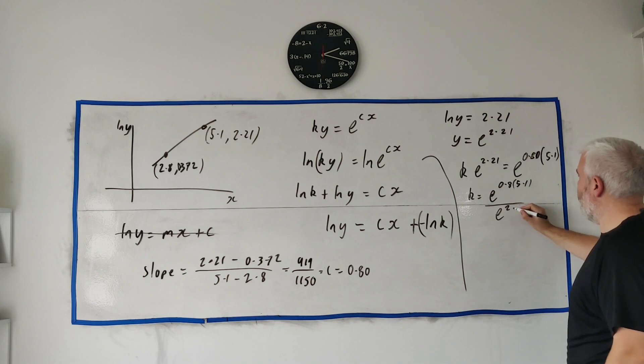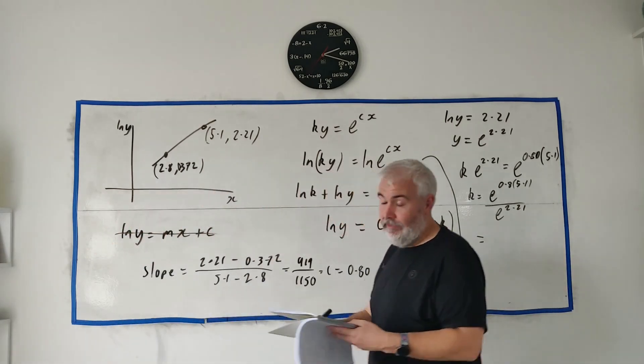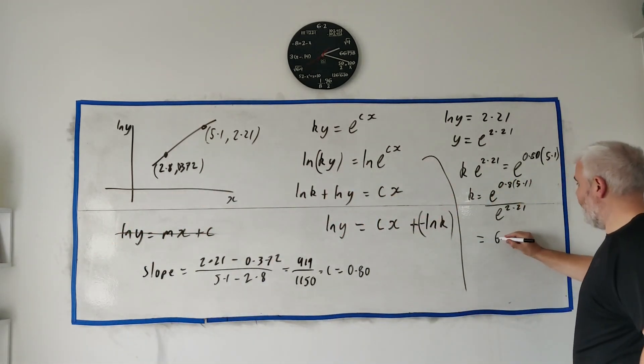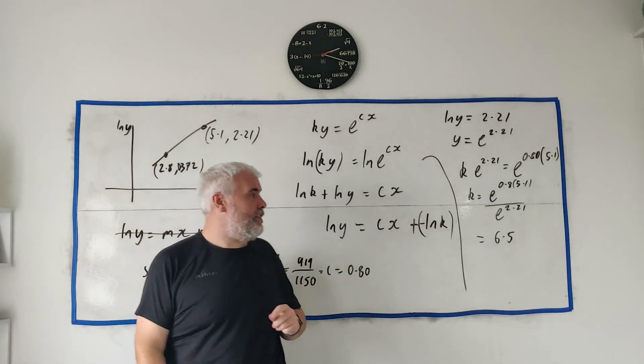Put all that into a calculator, let me just check my own notes, and to two significant figures we get 6.5. Yeah, two significant figures, not two decimal places.